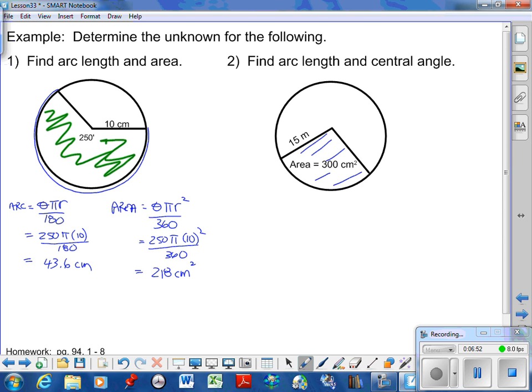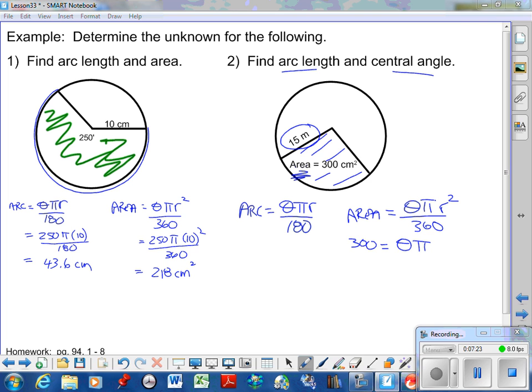The second example tells us this area is 300 and the radius is 15. We want to find arc length and central angle. I know my arc length formula is θπr over 180, but I don't have the central angle. I have area, so that's where I'm going to start: θπr² over 360. The area is 300, θ is what I'm looking for, radius is 15 squared, all over 360. Solving for θ: 300 times 360, divide by π, then divide by 15 squared. I end up with a central angle of 153 degrees.